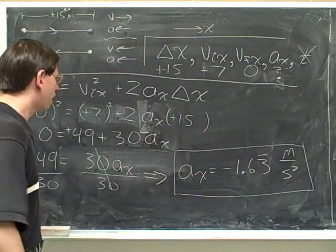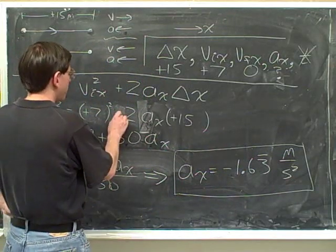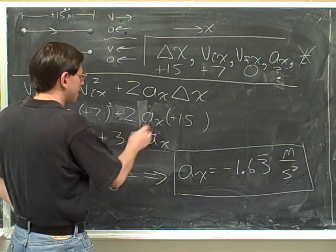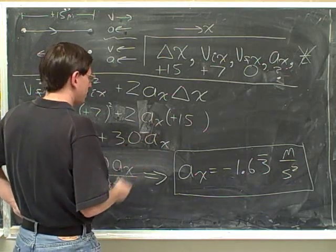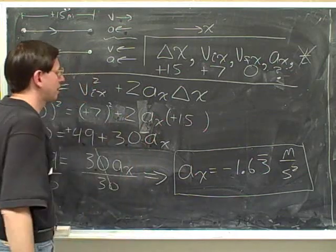So even though we knew the acceleration was going to be negative, that didn't mean that we put a minus sign over here. We just said, well, I think the acceleration is going to come out to be negative. But that negative sign is included in this variable. There's no point putting another negative sign out in front.